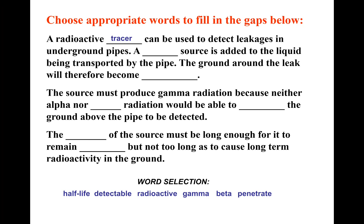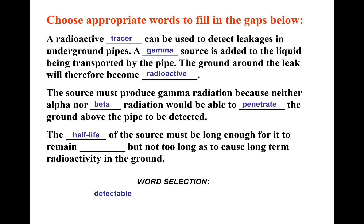A radioactive tracer can be used to detect leakages in underground pipes. A gamma source is added to the liquid being transported by the pipe, and the ground around the leak will therefore become radioactive. The source must produce gamma radiation because neither alpha nor beta radiation will be able to penetrate the ground above the pipe to be detected. The half-life of the source must be long enough for it to remain detectable, but not so long as to cause harm or long-term radioactivity in the ground.